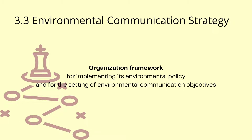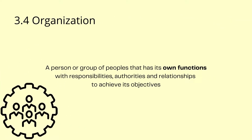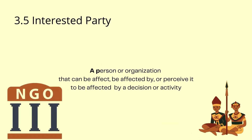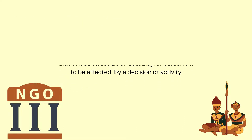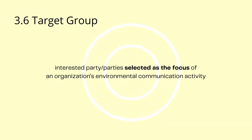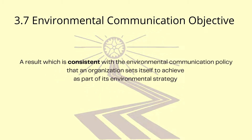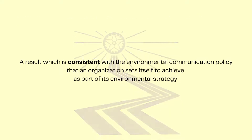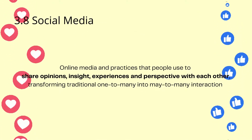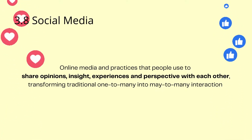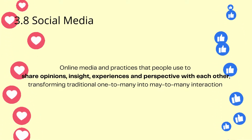An organization is a person or group of people that has its own functions with responsibilities, authorities, and relationships to achieve its objectives. An interested party is a person or organization that can affect, be affected by, or perceive itself to be affected by a decision or activity. A target group is an interested party or parties selected as the focus of an organization's environmental communication activity. An environmental communication objective is a result consistent with the environmental communication policy that an organization sets itself to achieve as part of its environmental strategy. Social media refers to online media and practices that people use to share opinions, actions, insights, experiences, and perspectives with each other, transforming traditional one-to-many into many-to-many interaction.